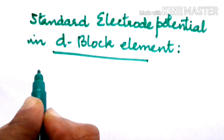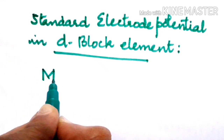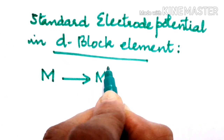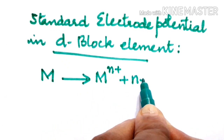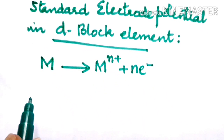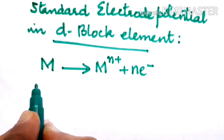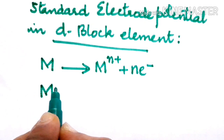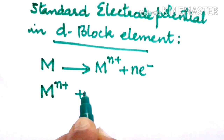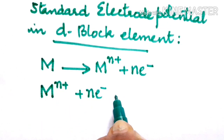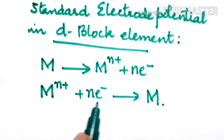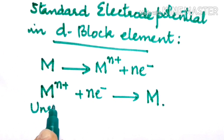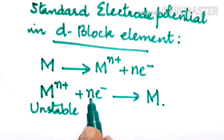We know that metals are electropositive, meaning they easily lose electrons and become ions. When we talk about standard electrode potential, the reaction occurring is summarized as M^n+ + n electrons giving M. This reduction happens only when M^n+ is unstable, so it can readily take up electrons.